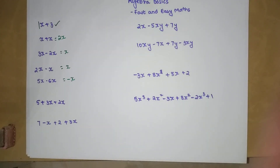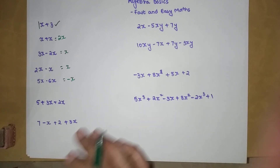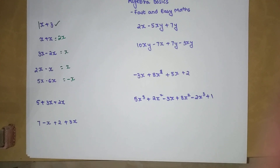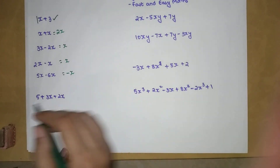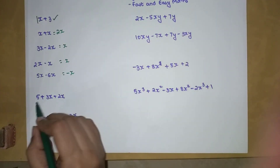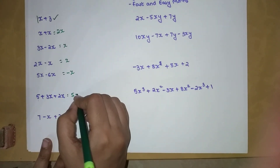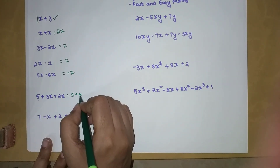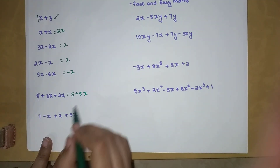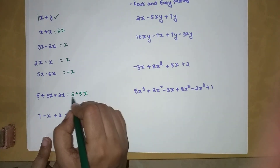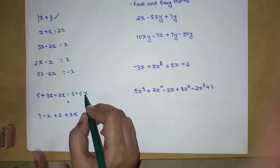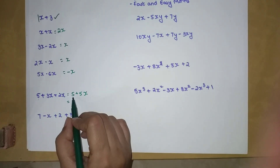If you like the way I'm explaining, please go ahead and hit the like button — that gives me tremendous encouragement to make these videos. So now we have 5 plus 3x plus 2x. The 5 has no variable, so we write it as it is. 3 plus 2 gives us 5, so we get 5 plus 5x.